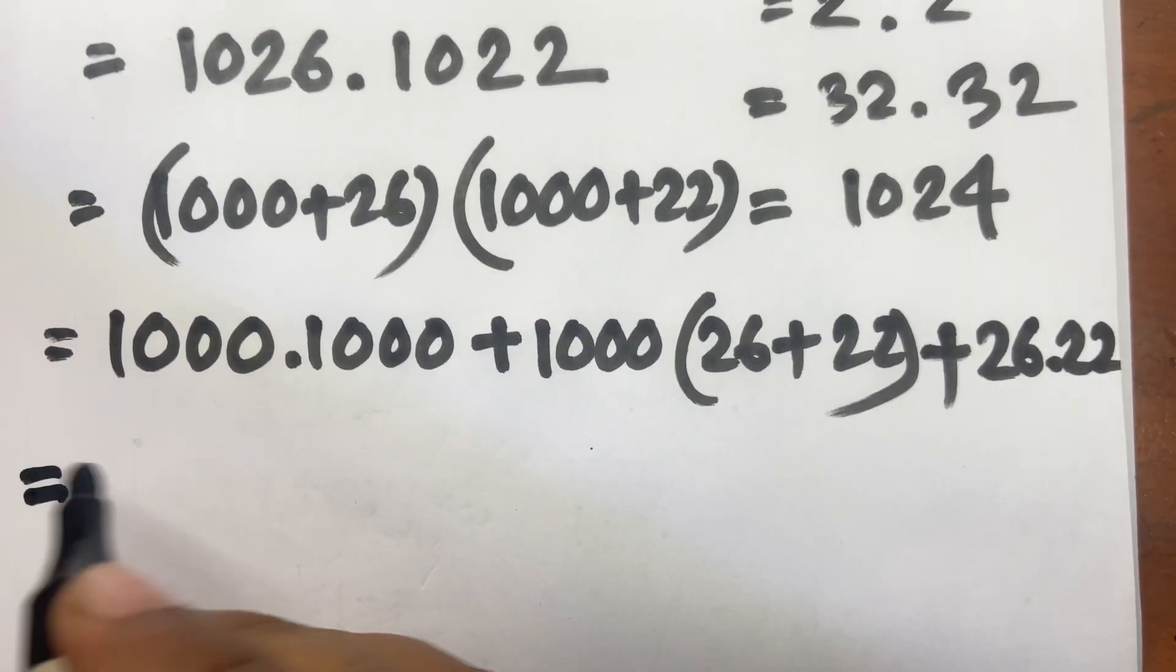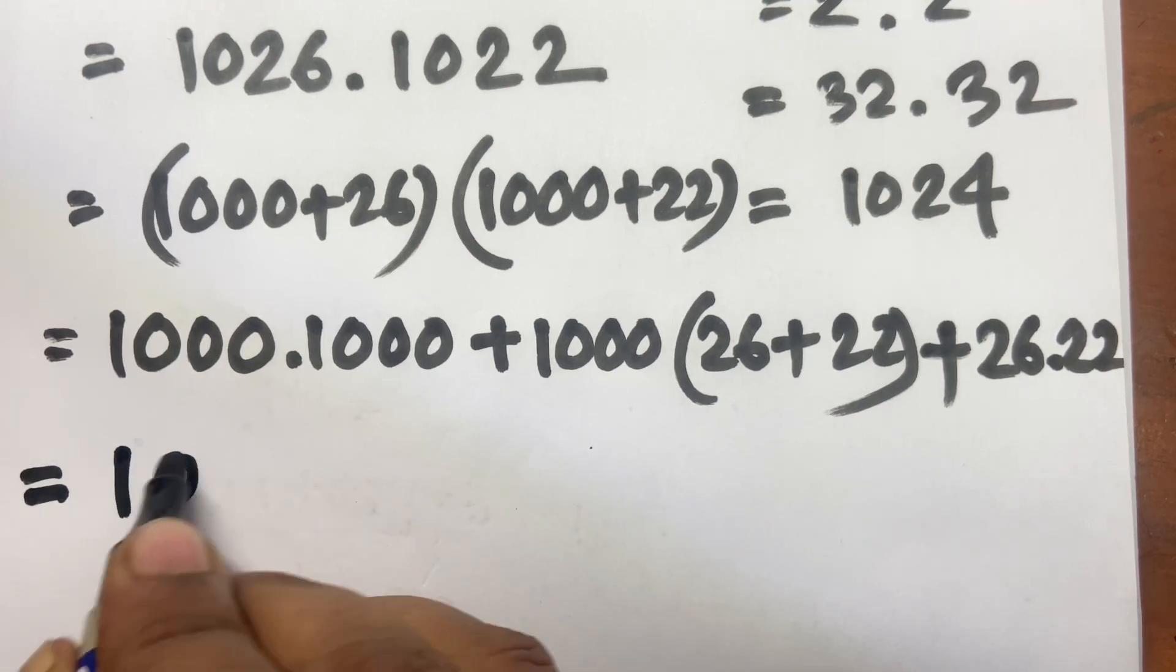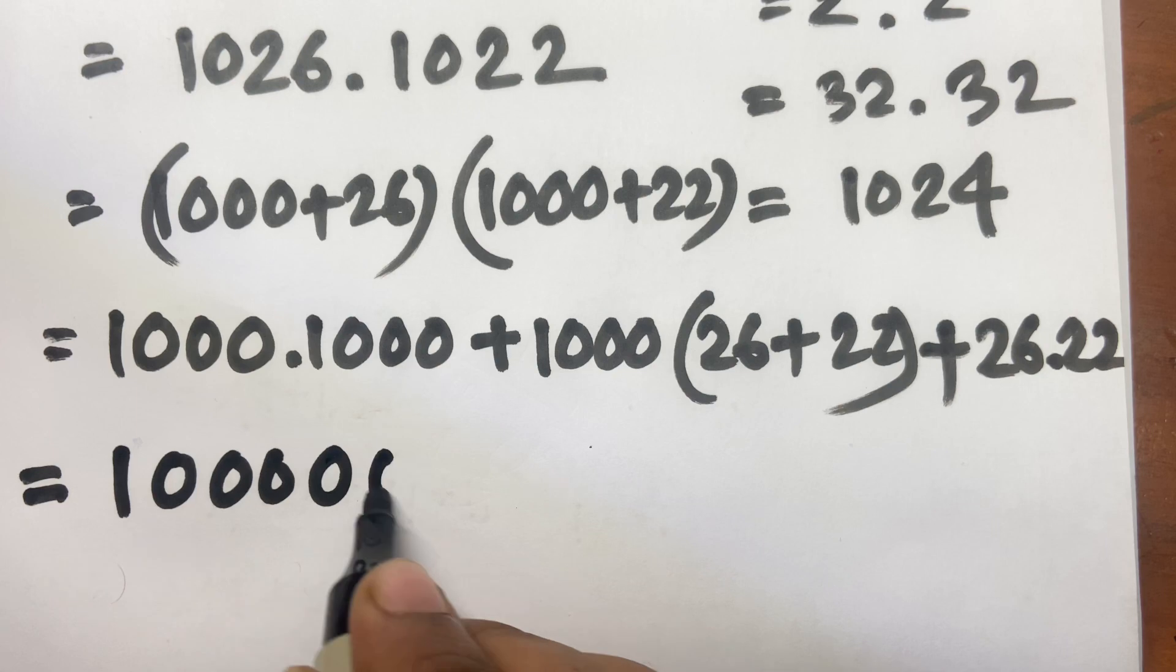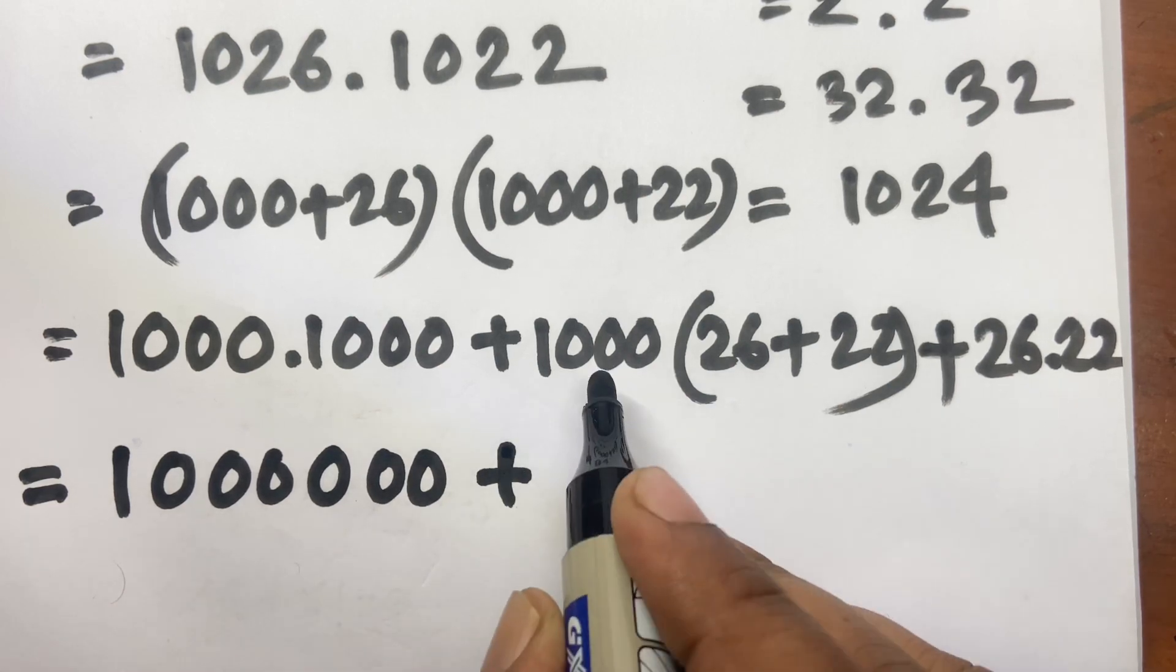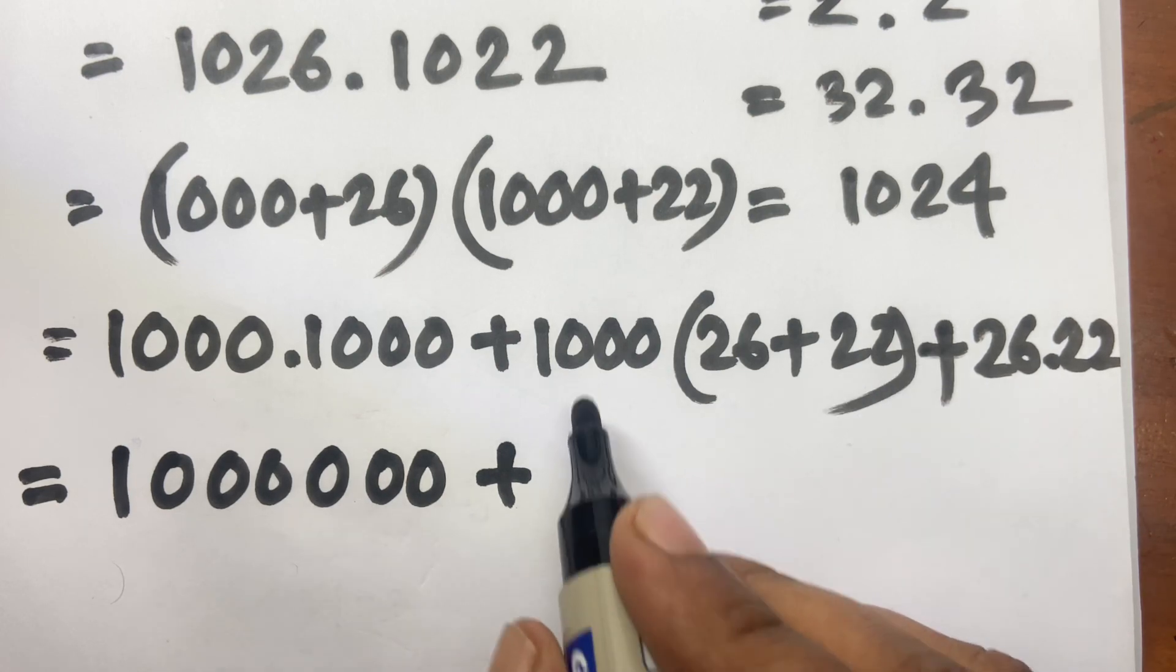Now we know 1000 times 1000 equal to 1000000. And here is 26 plus 22 equal to 48, and 48 times 1000.